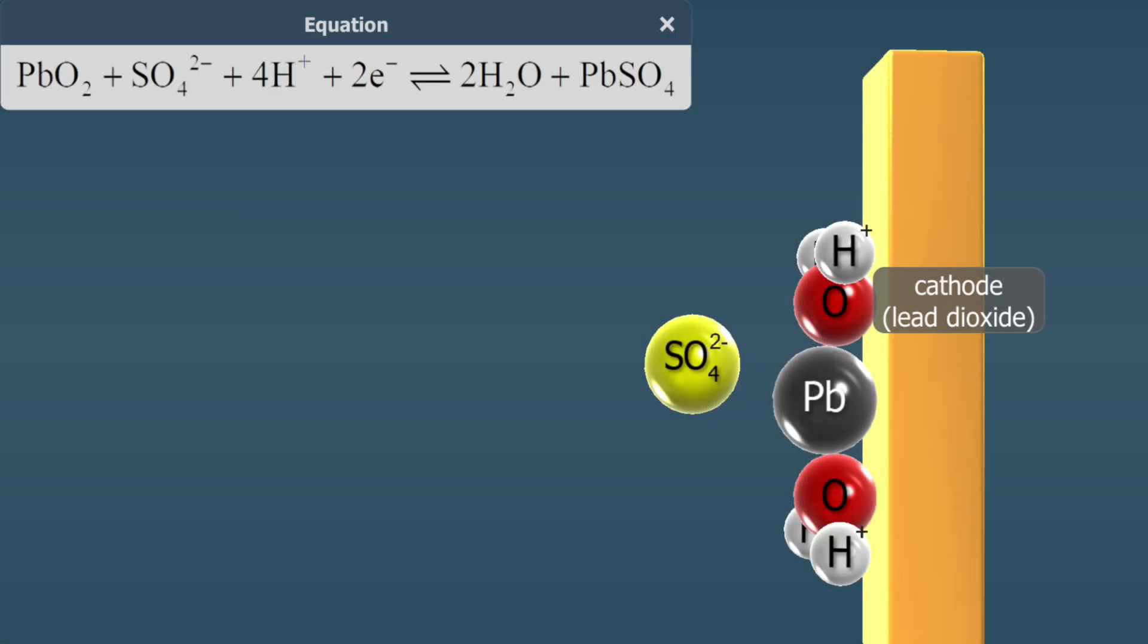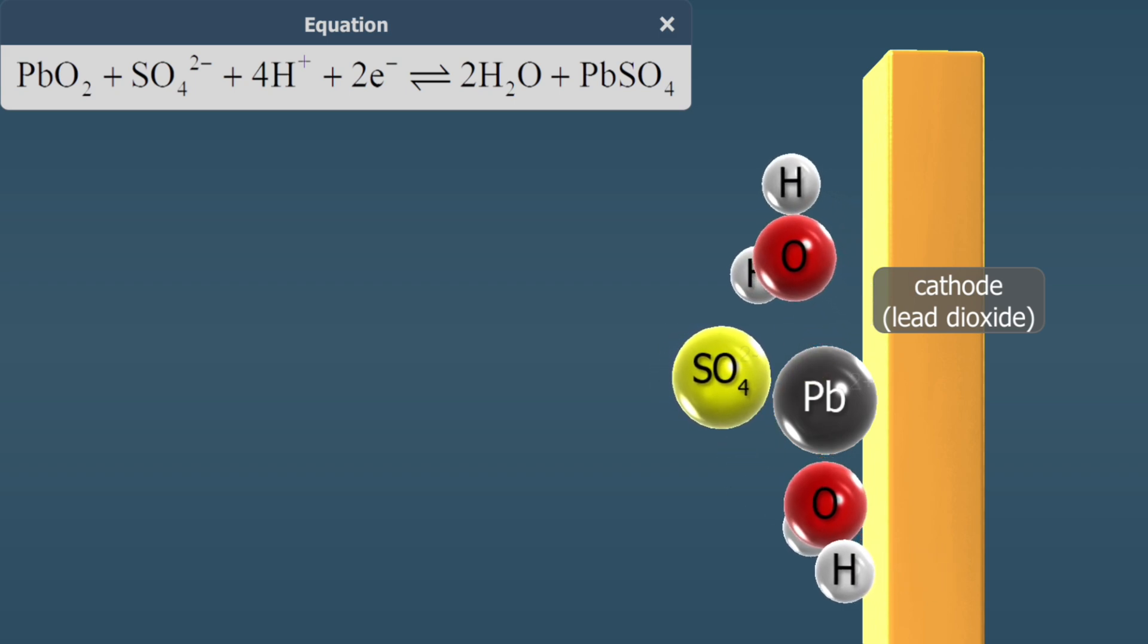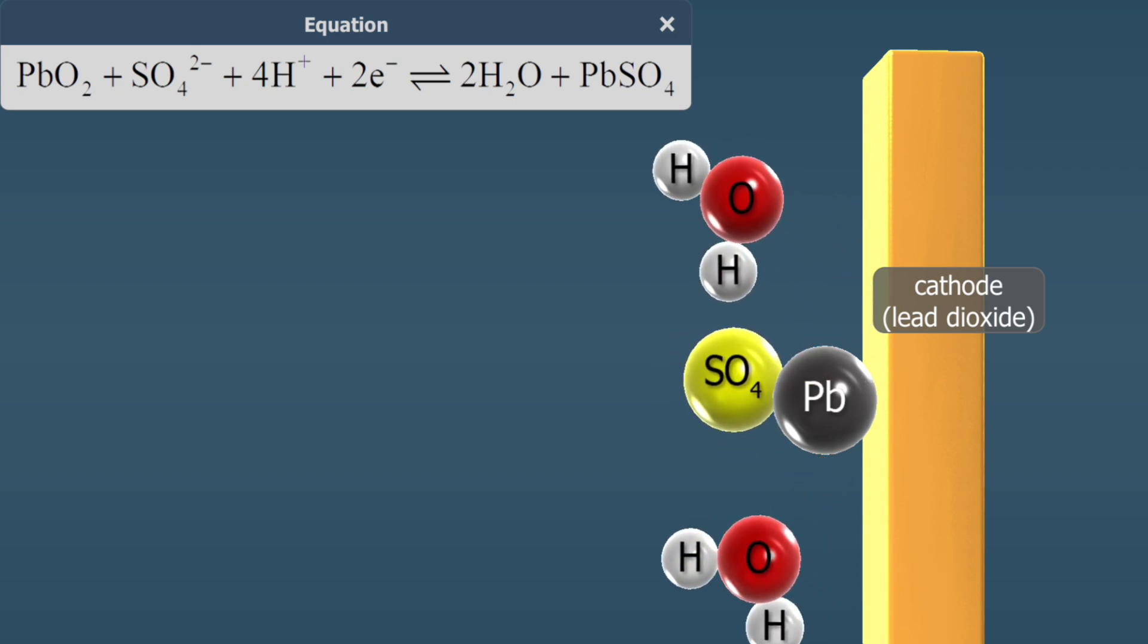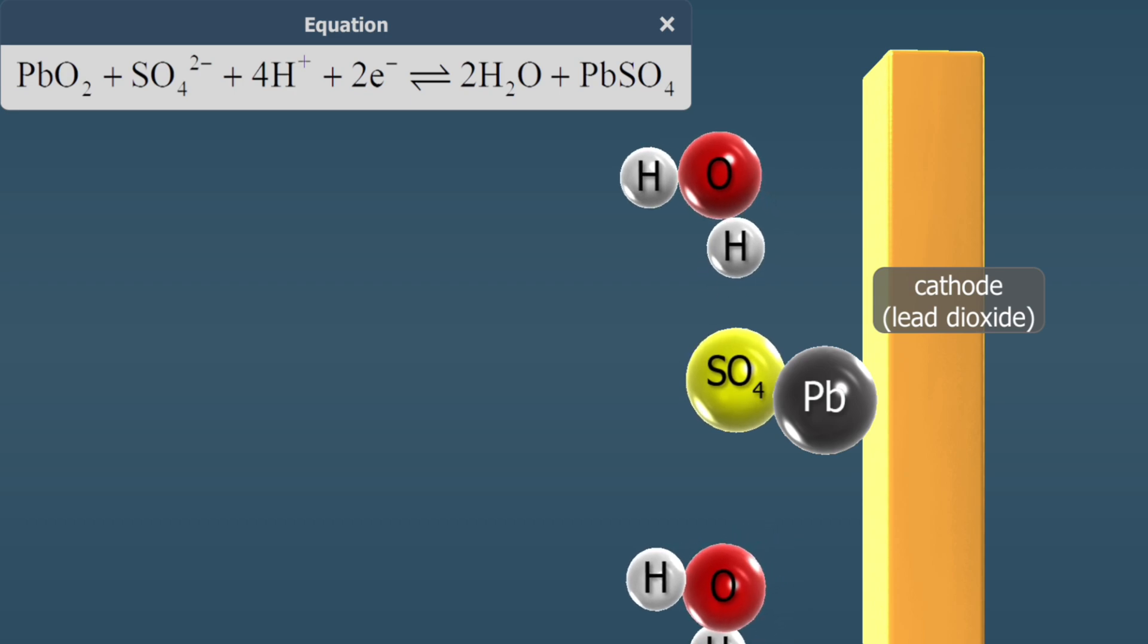During discharge, the lead dioxide on the lead dioxide plate also reacts with the sulfuric acid to form lead sulfate. During the process, the oxygen ion in the lead dioxide and the hydrogen ions in the electrolyte combine to form water.